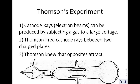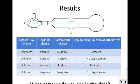Next, we have Thomson's experiment. Thomson's experiment addressed the solid, uniform nature of the atom. What he did is he created something called cathode rays by subjecting a gas to a large voltage. Then Thomson directed these cathode rays between two charged plates. The reason Thomson did this is he knew that opposites would attract, so he was testing the cathode ray to see what its nature was, because the cathode ray had come from the gas. These were his results.